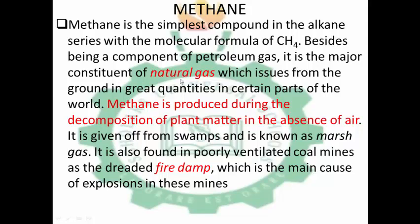But methane is the major constituent of natural gas. Methane is produced during the decomposition of plant matter in the absence of air, so when plant matter decomposes in the absence of air, methane is produced. It is often given off from swamps and is known as marsh gas. These are other names for methane. Methane is also known as marsh gas because it is given off from swamps.